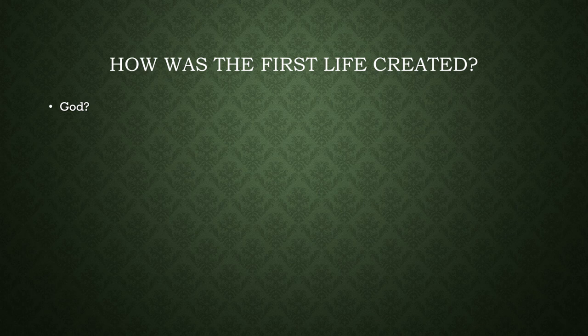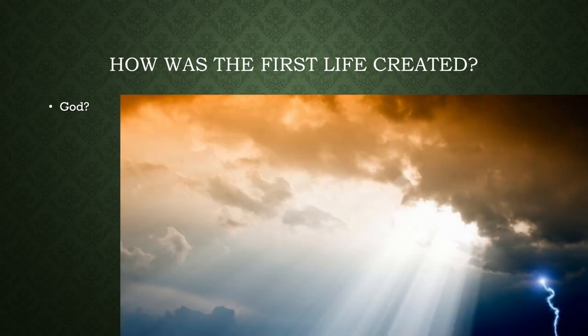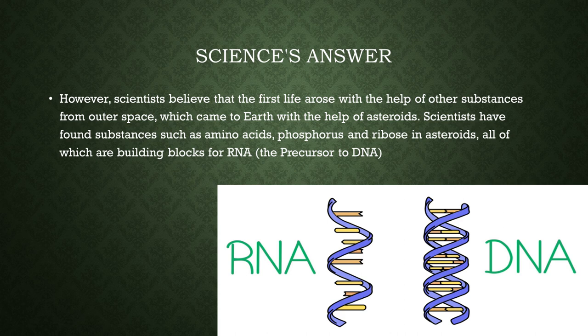But how was the first life on Earth created? If you are a believer in Christianity, you would probably answer with God. This also applies for Judaism, Islam, Hinduism, Buddhism and so on. But if you ask scientists, they believe that the first life on Earth arose with the help of substances from outer space, which came to Earth via asteroids and meteorites. Scientists have found substances such as amino acids and ribose in asteroids, which are all building blocks for RNA — the precursor to DNA.